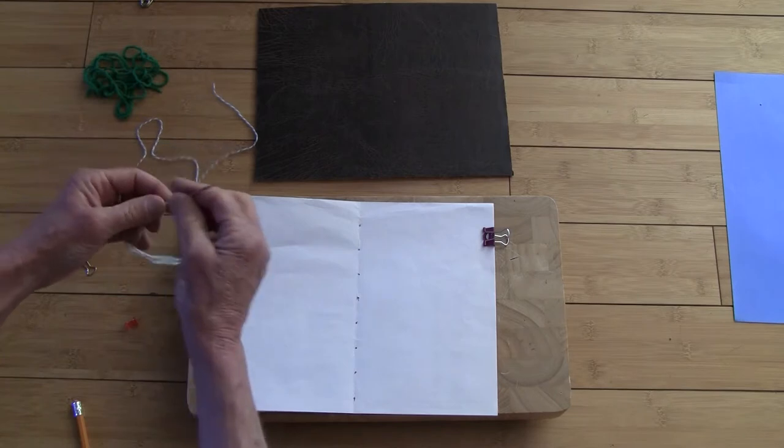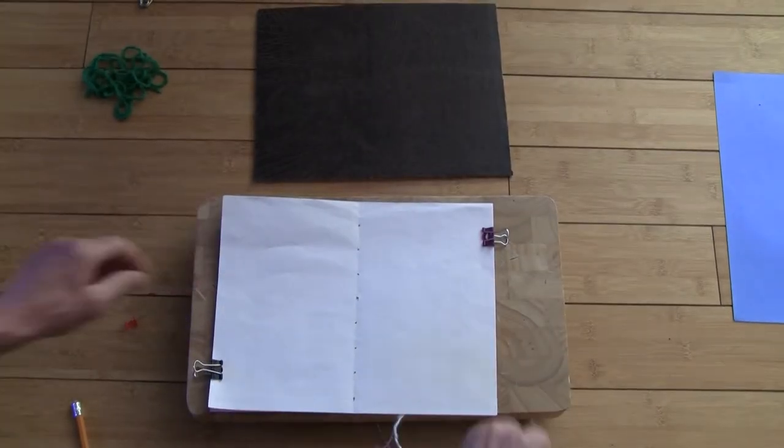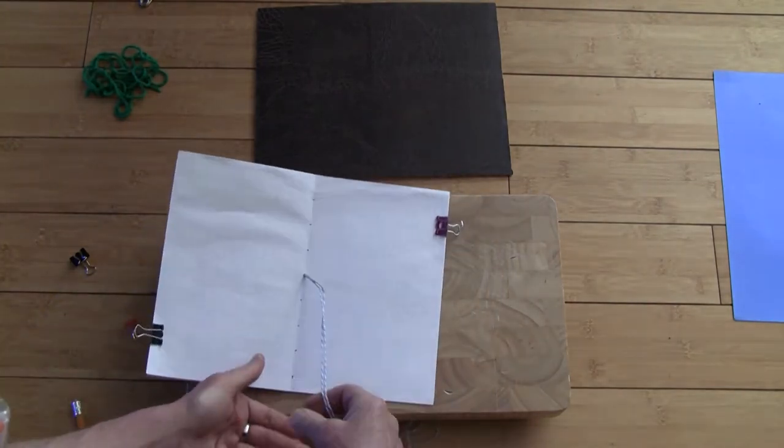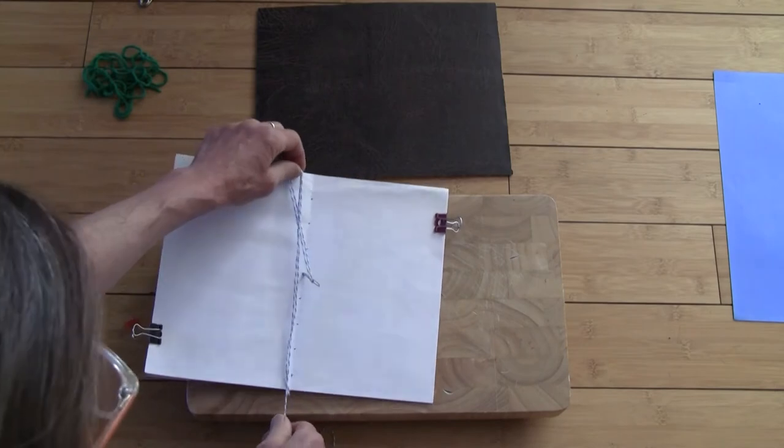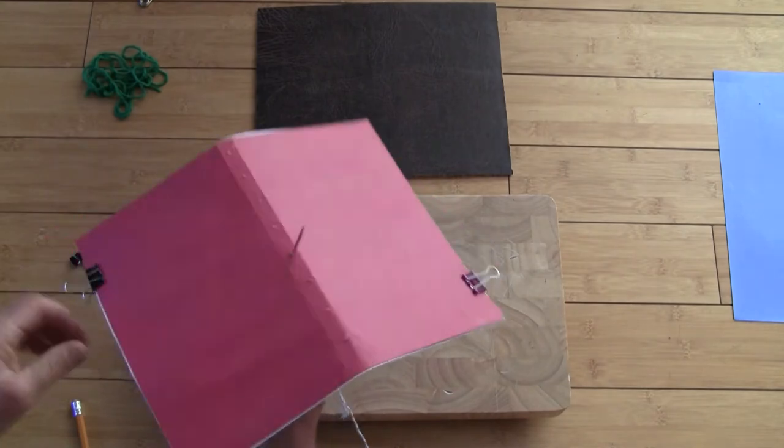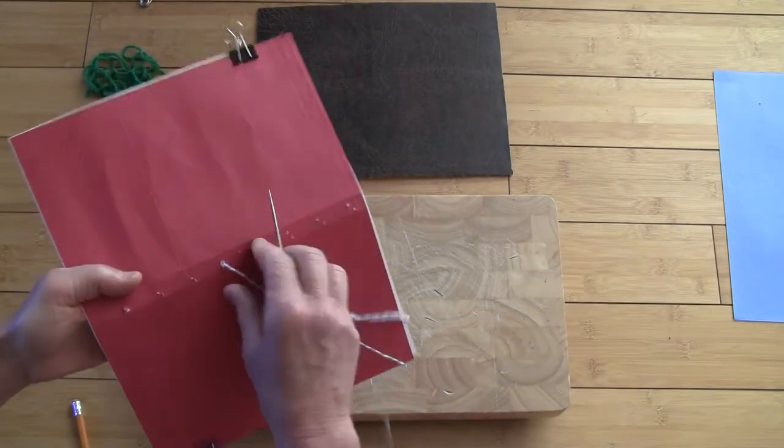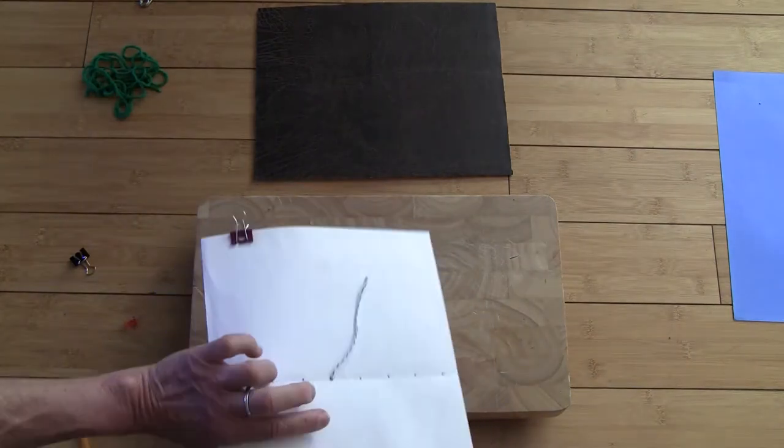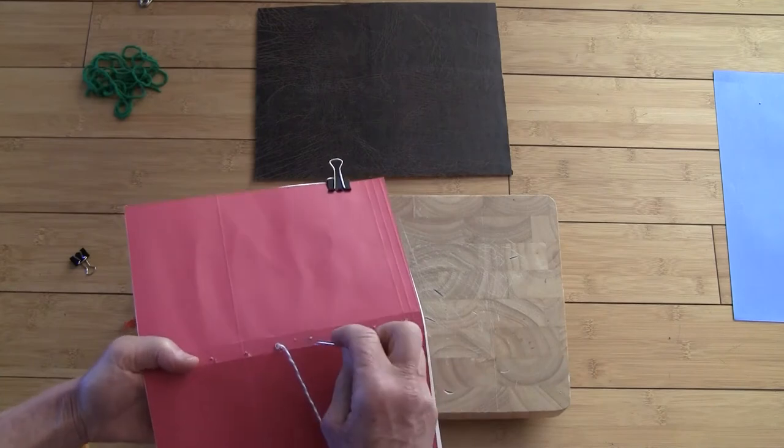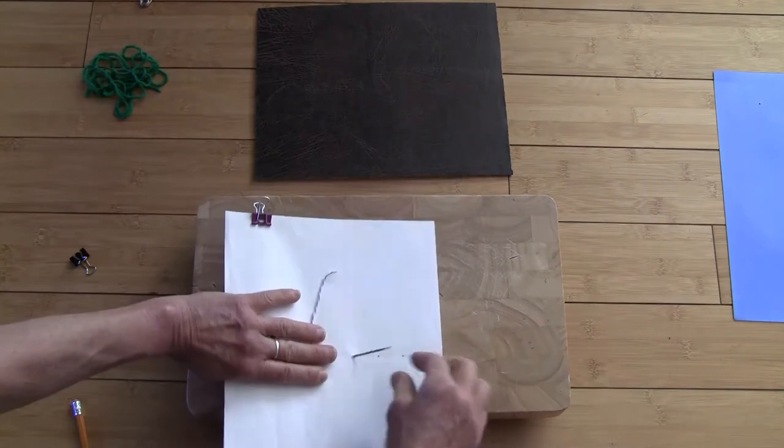Grabbing my needle, I'm going to go down through the center one. So, you pick a hole. If you want to know how much yarn, do about two lengths of your book. So, I'm going to come up through my backing. And I'm going to leave a tail. So, I'm going to leave about that much free. And you can hold on to it if you don't want it to come through. Then, I'm going to go down through the next hole. It doesn't matter which direction you go.